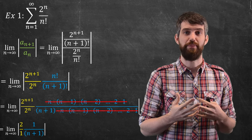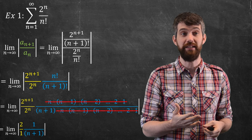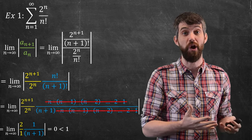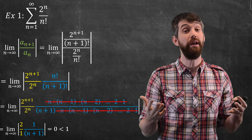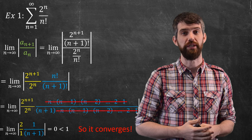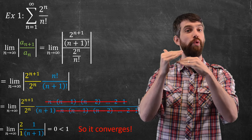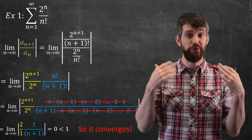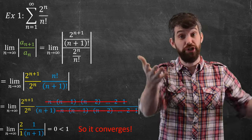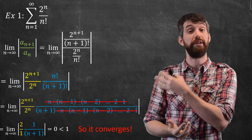So what do we get? 2 over 1 from the powers of 2, and then 1 over (n+1) from the factorial portion. Now we have n in the denominator; taking the limit as n goes to infinity, this equals 0. Zero is a number less than 1, so by the ratio test this series converges. In the limit as n goes to infinity, the ratios between terms get closer and closer to multiplying by 0 — like a geometric series with ratio 0, which certainly converges.